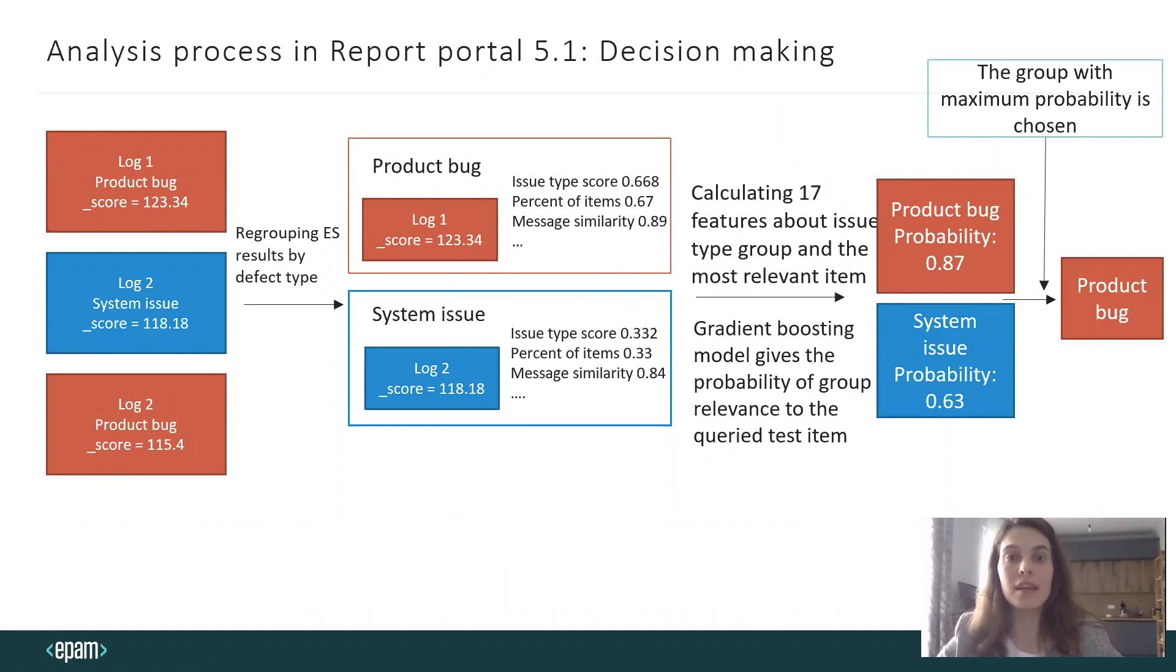When we get the Elasticsearch results, we regroup them by defect type. Each group is characterized by the most relevant item with maximum score within the group. After that, we calculate miscellaneous statistics and similarities for each group.